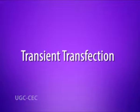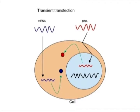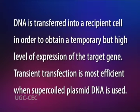Based on longevity of transfection, it may be of two types. First is transient transfection. In transient transfection, the transfected DNA is not integrated into the host chromosome. DNA is transferred into a recipient cell in order to obtain a temporary but high level of expression of the target gene. Transient transfection is most efficient when supercoiled plasmid DNA is used.